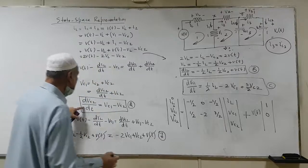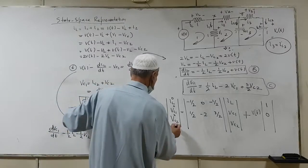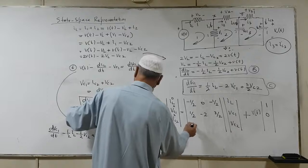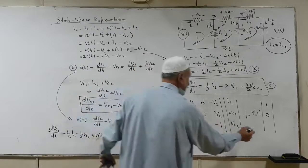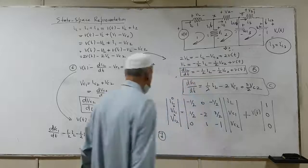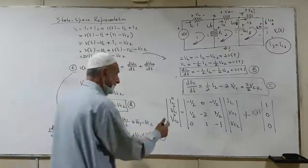Last but not least is this one. Vc1, Vc2, it is 0, 1, minus 1, and of course, there is no Vt. So this completes one set. Now, the other set is the output.